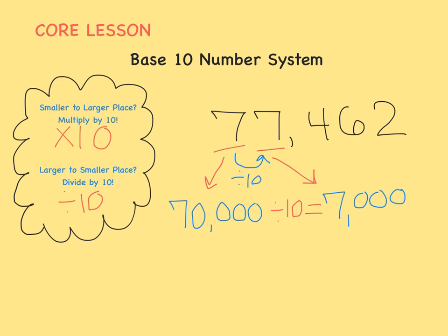70,000 divided by 10 equals 7,000. Don't forget, we could also think of that as 7,000 times 10 equals 70,000.